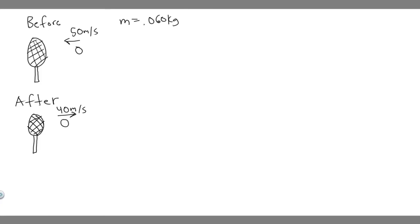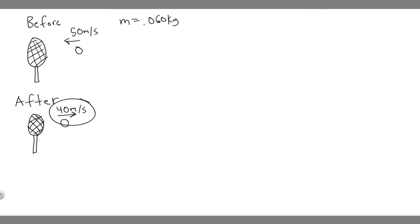In this problem, we're told a tennis player receives a shot with the ball — 0.06 kilograms — traveling horizontally at 50 meters per second, and returns the shot with the ball traveling horizontally at 40 meters per second in the opposite direction. Part A: what is the impulse delivered to the ball by the racket? Part B: what work does the racket do on the ball? So before, we have this ball traveling towards the racket at 50 meters per second, and after the racket hits the ball, it travels backwards at 40 meters per second. We know the mass of the ball is 0.06 kilograms.